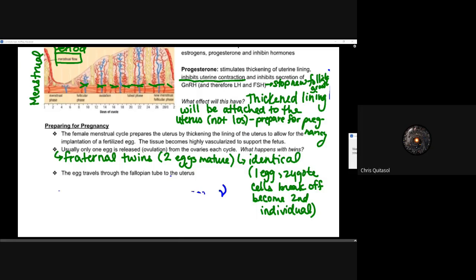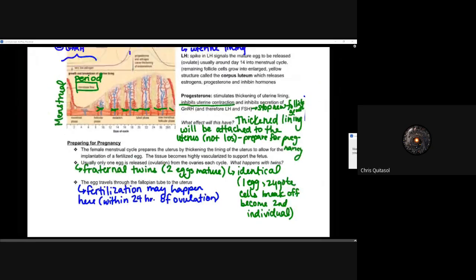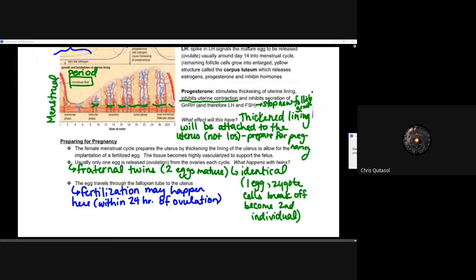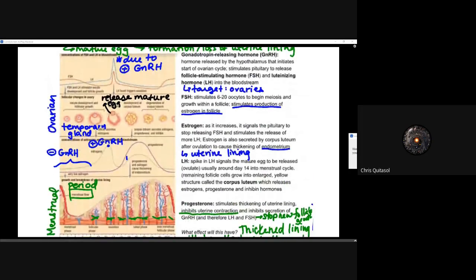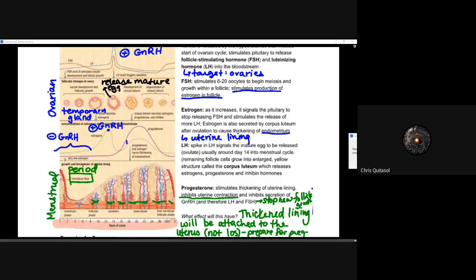The egg travels through the fallopian tube into the uterus, and fertilization may happen within 12 to 24 hours of ovulation. When looking at the diagram of hormone concentrations across the days of the cycle, it is important to recognize that all the hormone changes happen in conjunction with each other and are connected to each other.